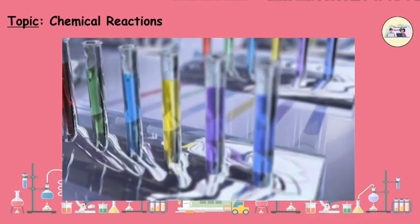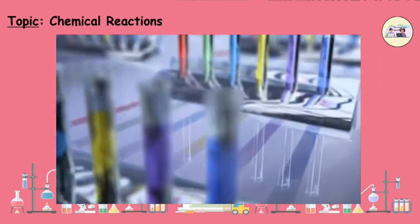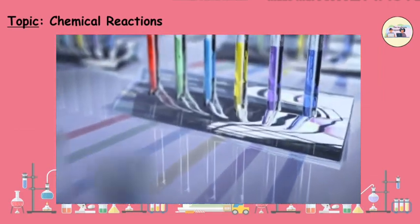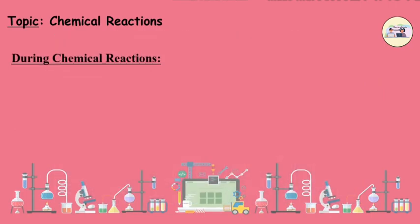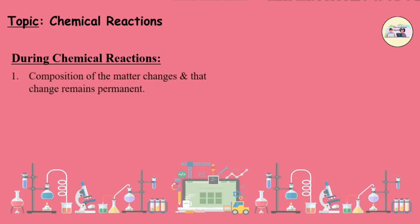In the 18th and 19th century, some scientists carried out fundamental experiments on chemical reactions. They proved from their experiments that during chemical reactions, composition of the matter changes and that change remains permanent.